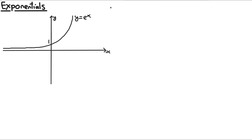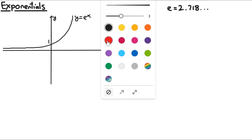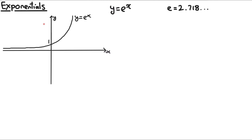We call this number e, and the function is e to the power of x, where e is approximately 2.718. Its graph is the exact same as its derivative.